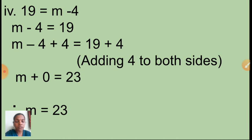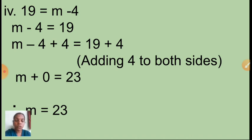I hope you understood today's session. We discussed practice set 27, third and fourth questions. In the third question we checked whether variable values were correct, and in the fourth question we solved equations to find variable values. You have to identify the variable and determine which operation to do on both sides.